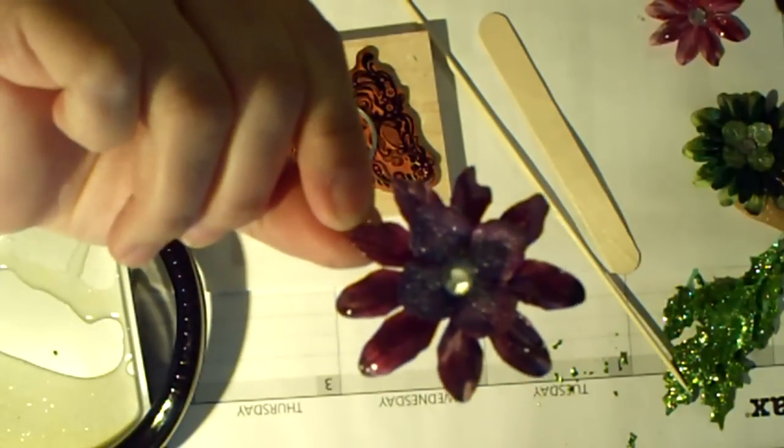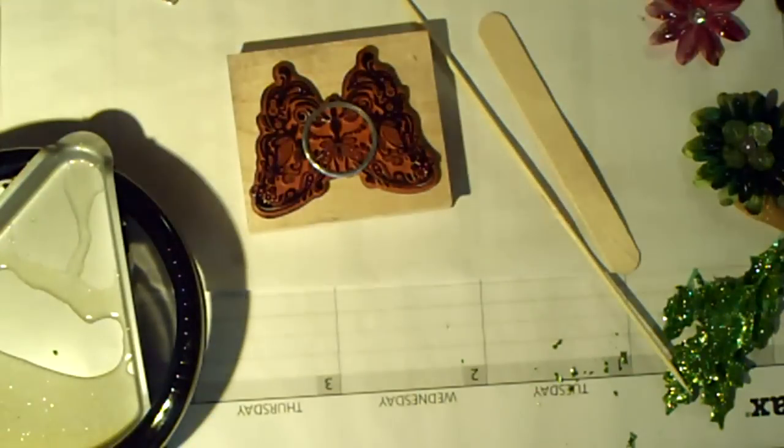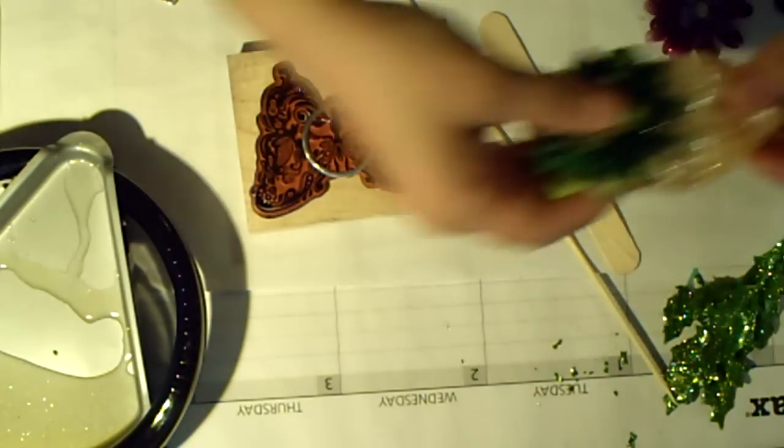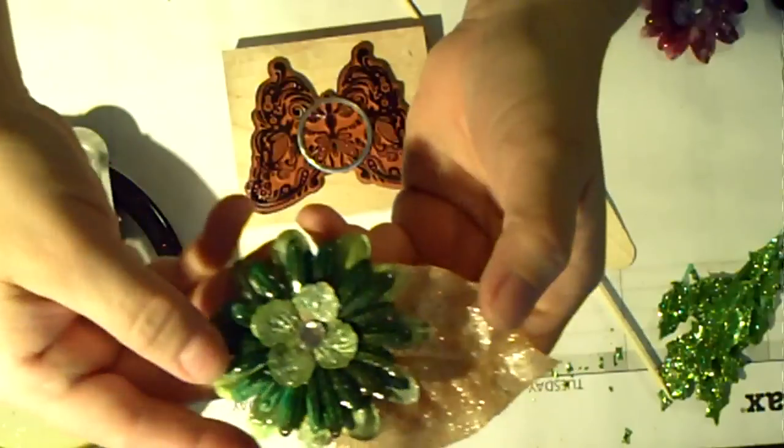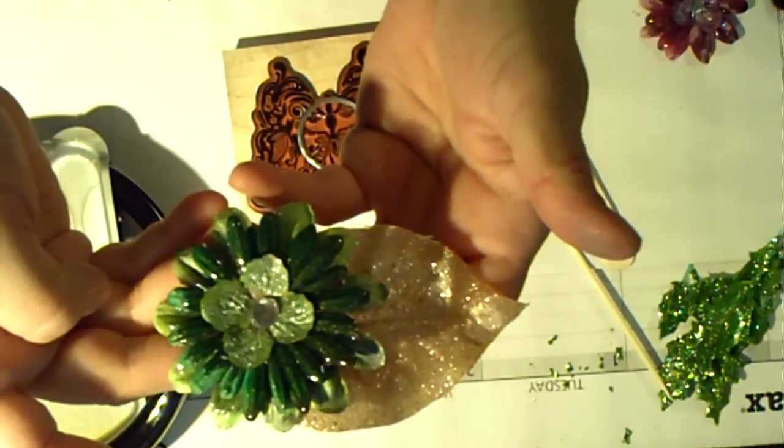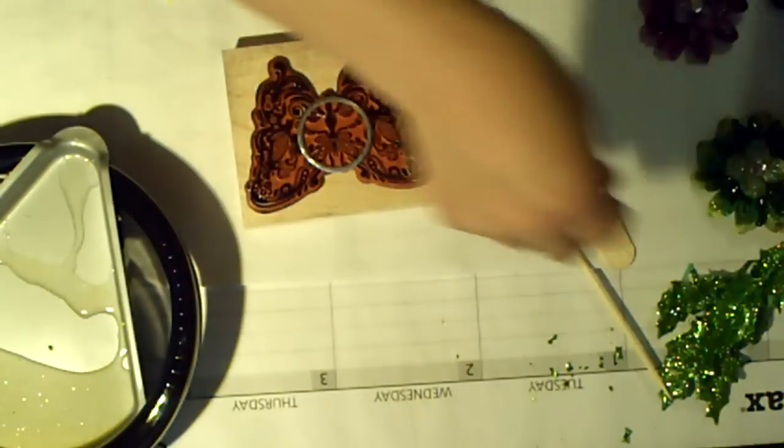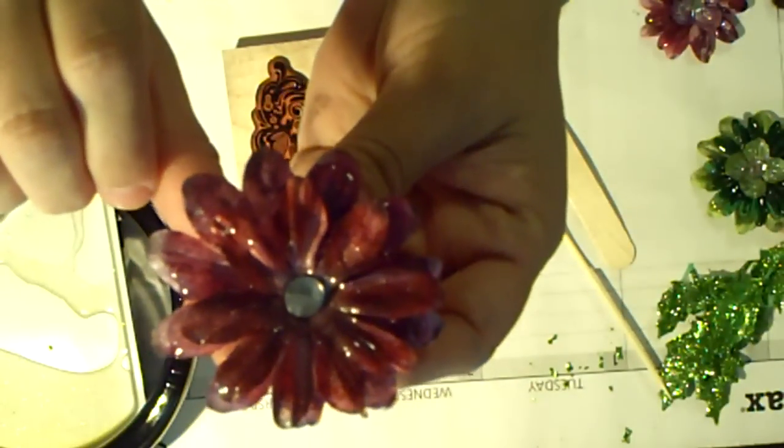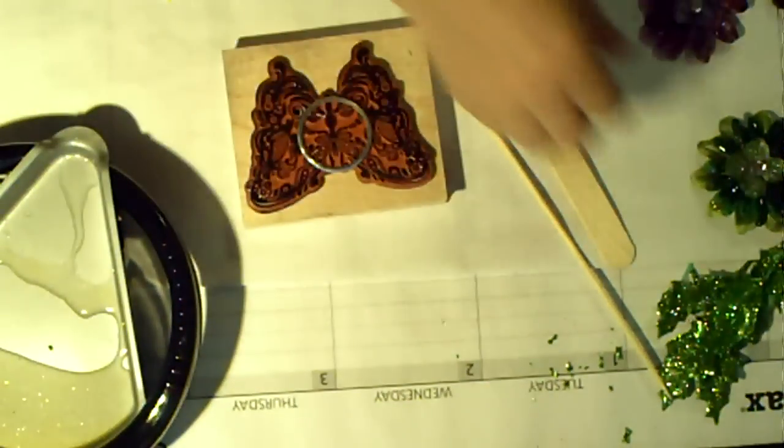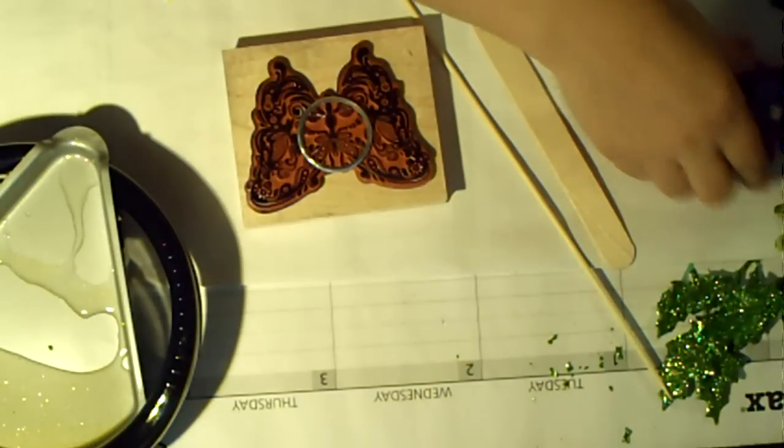I haven't glued these down so they're flipping all over. That one's cute. This is the leaf that I covered. These are three layers and this looks really pretty. Then this is two layers of flowers both covered with UT, so you're gonna have to just play with it and see which way you like it.